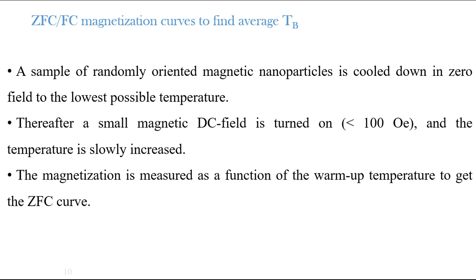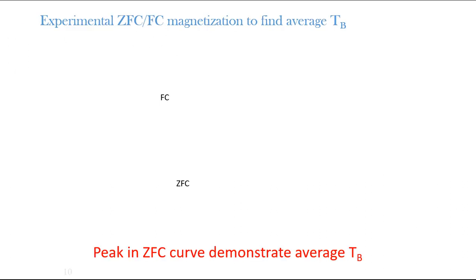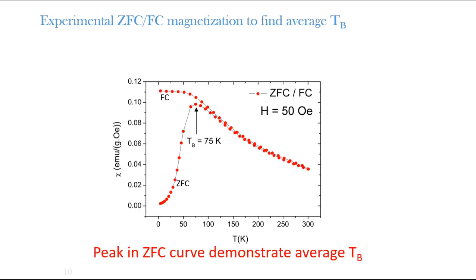After applying the small field, the temperature is increased slowly and the magnetization is measured as a function of increasing temperature. This gives the zero field-cooled curve. For the field-cooled curve, after completing the zero field-cooled measurement, we cool the sample back down to the lowest possible temperature in the same applied field, and measure the magnetization as a function of decreasing temperature. In this scenario, we end up with the field-cooled curve.